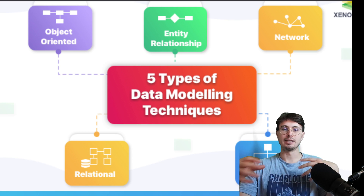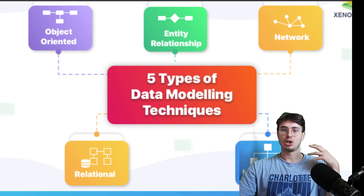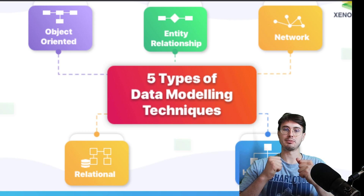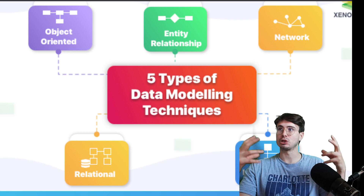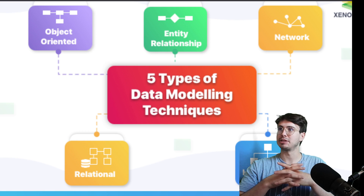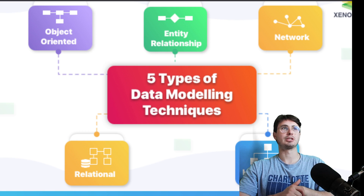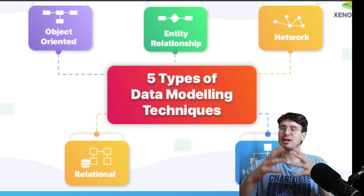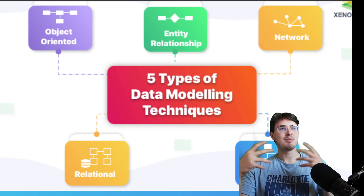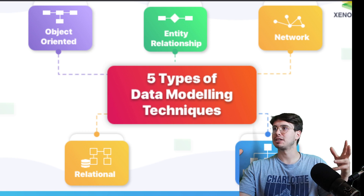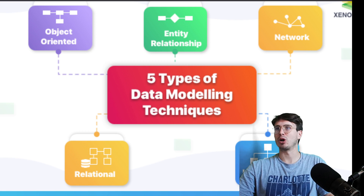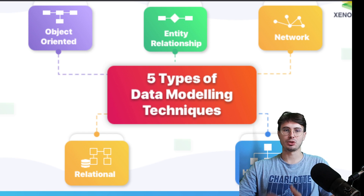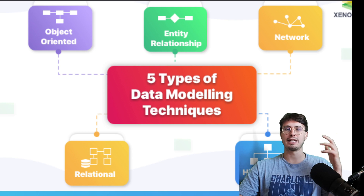You also have object-oriented data models, which combine data and the operations that can be performed on data — like extracting — into a single model. This is useful in applications where you need real-world representation of complex relationships and operations, where you may not have a large number of objects but each object stores a lot of different state changes — for example, representing the robotics of a car factory robot and all the operations it's performing.